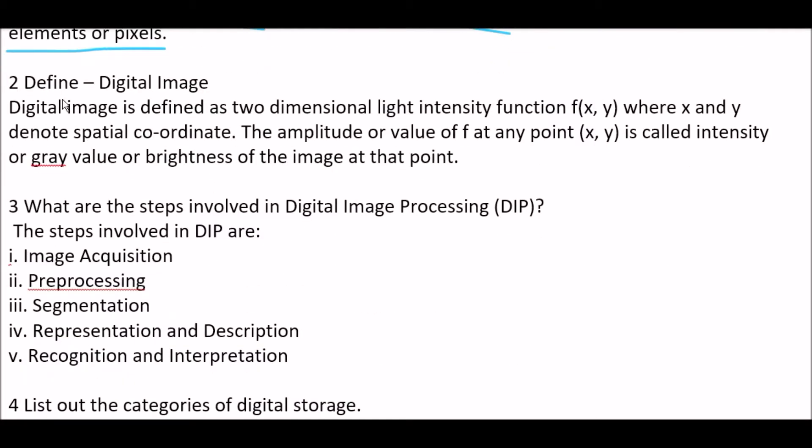Next question, define digital image. Answer is, digital image is defined as two-dimensional light intensity function F of X and Y. X and Y here denote spatial coordinates. The amplitude or value at any point X and Y is called intensity or brightness of the image at that point.